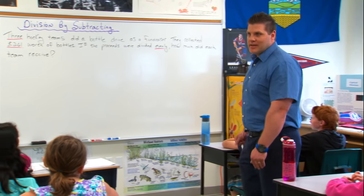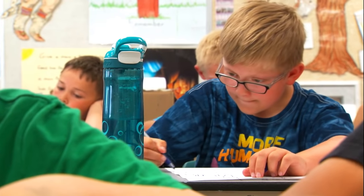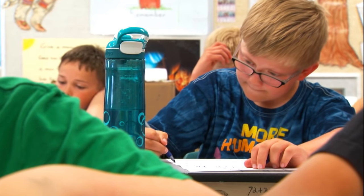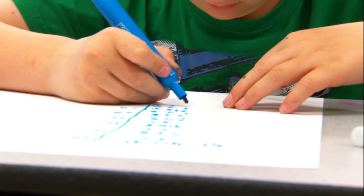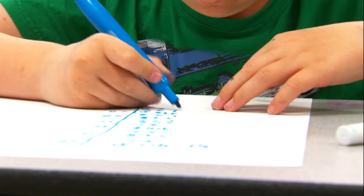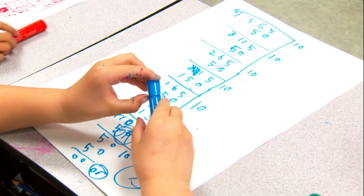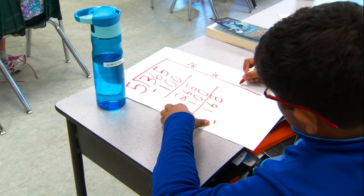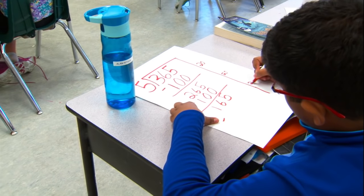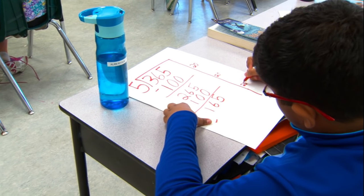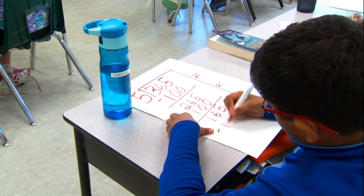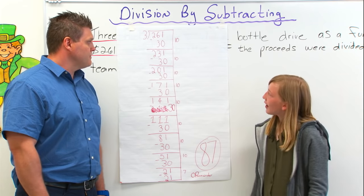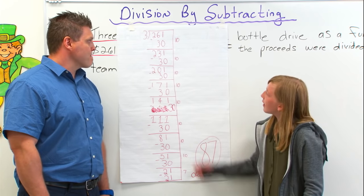This strategy allows students of varying levels of understanding to complete the division question and arrive at a correct solution. Students often begin by subtracting groups of 10 times the divisor, as these are easy groups to subtract, and move to subtracting larger multiples as they become more proficient.